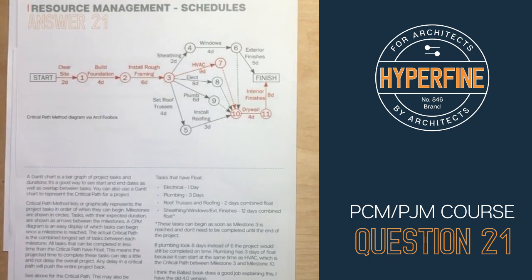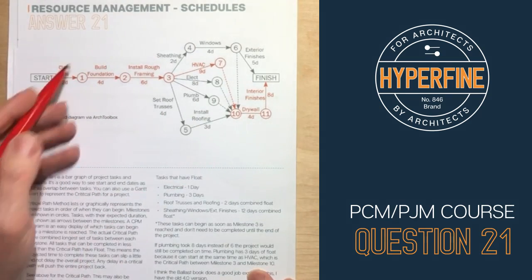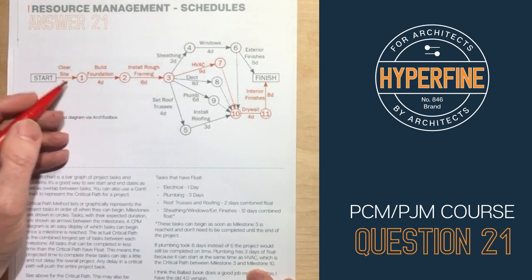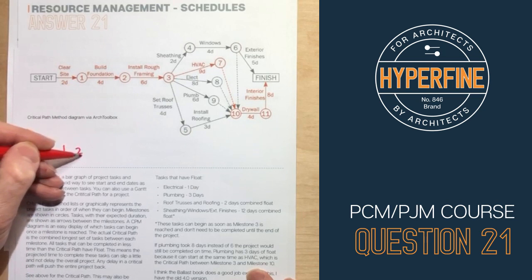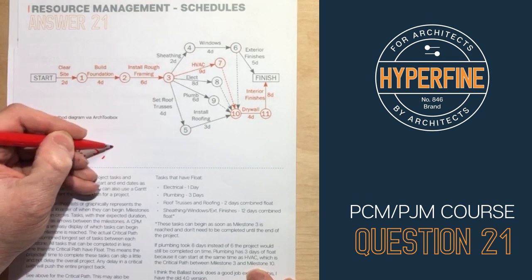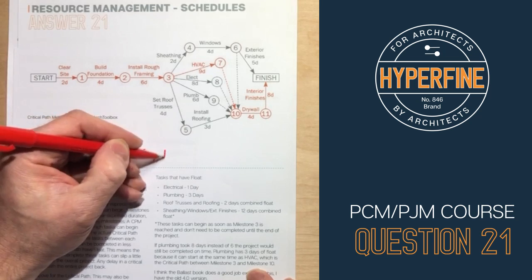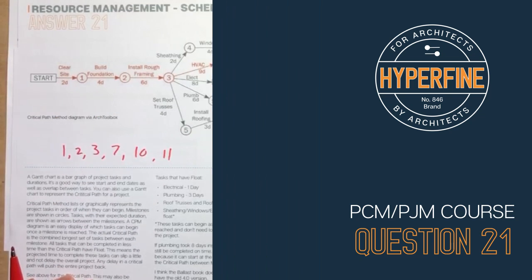You can represent the critical path graphically, but you can also express it as a sequence of events: milestones 1, 2, 3, 7, 10, 11 — that's your critical path.